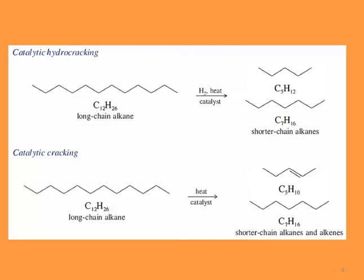The second example is catalytic cracking. We again start with C12H26, the same long-chain alkane, but this time in the presence of heat and catalyst only — no hydrogen. As you can see, we get different organic compounds: in the top product we have C5H10, which belongs to the alkene group, and in the bottom we have three different compounds.